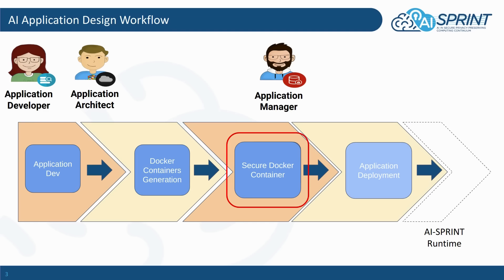As mentioned previously, we have the application developer and architects that develop the applications. These applications are typically carried out as Docker containers and they are generated using Docker Compose or Dockerfiles in order to carry out a certain functionality. In order to enhance the security, we use a transformation approach which turns a regular native Docker container into a secure Docker container, which is then finally deployed on the application's infrastructure in order to carry out a certain task.